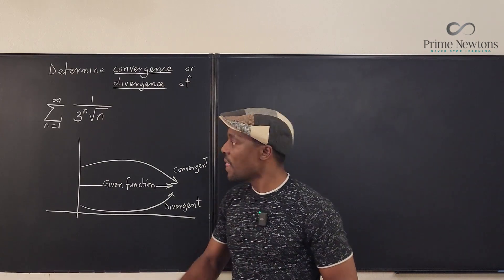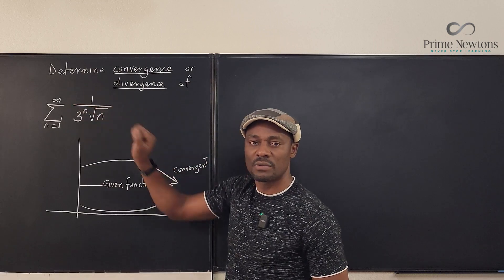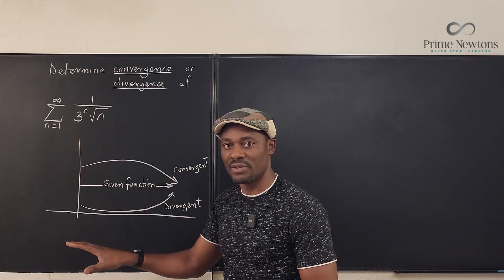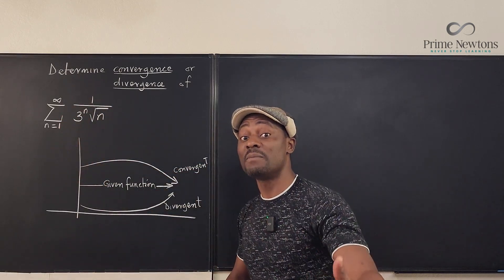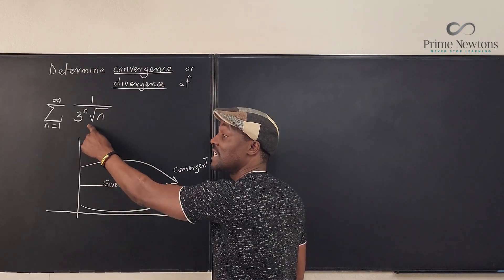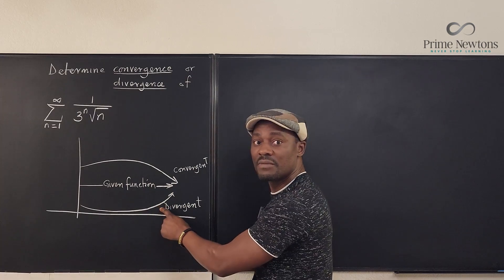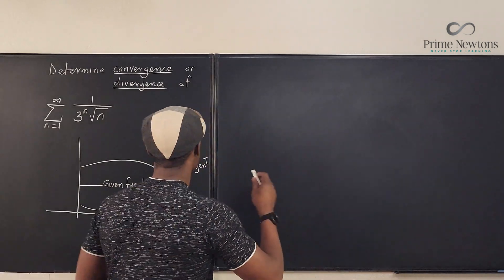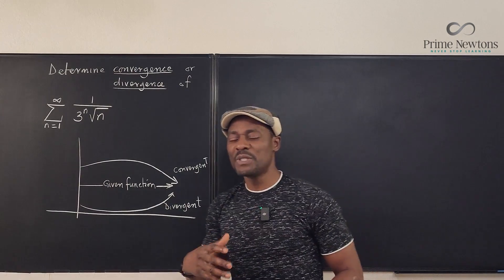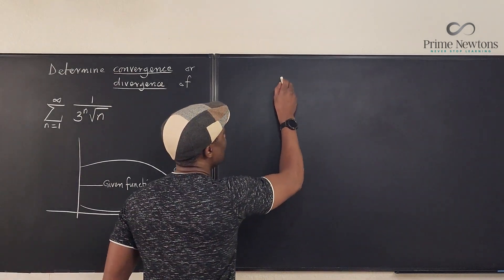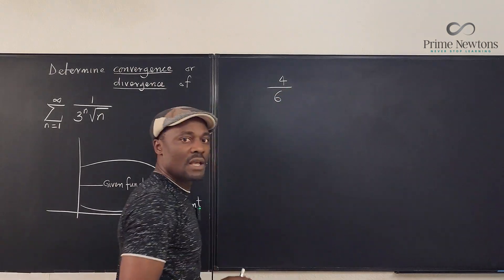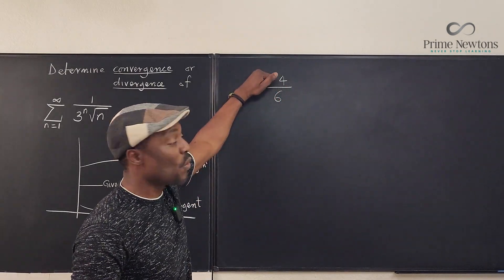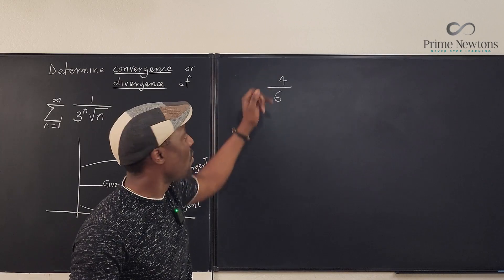So what we have to do: you're going to try to increase this function or decrease the function. Let's try the decrease first. How do you decrease a rational function? If I have 4 over 6 and I want to make this smaller, I need to increase the denominator or decrease the numerator.